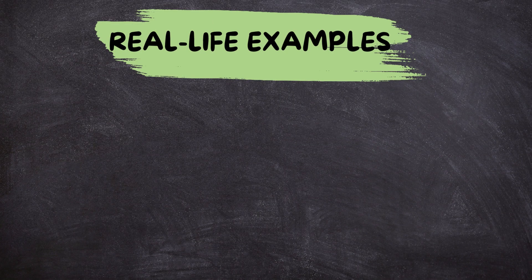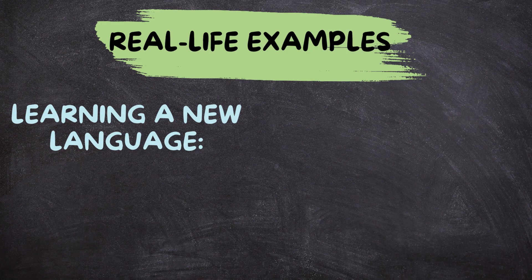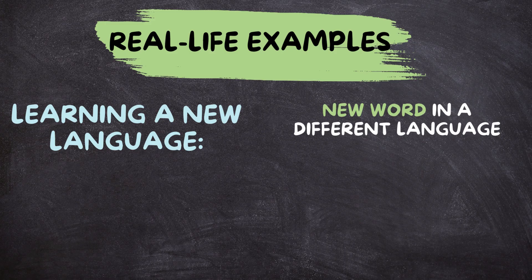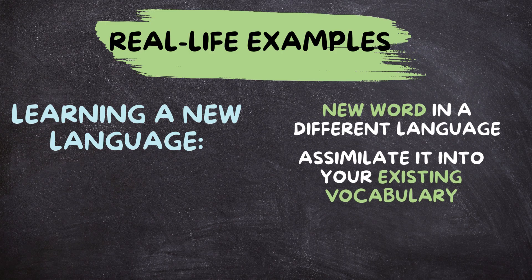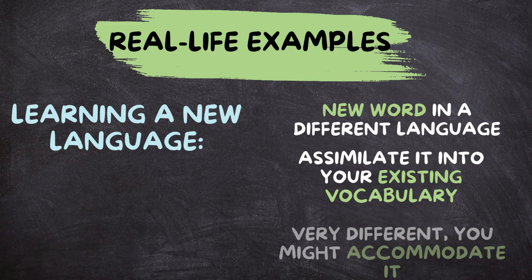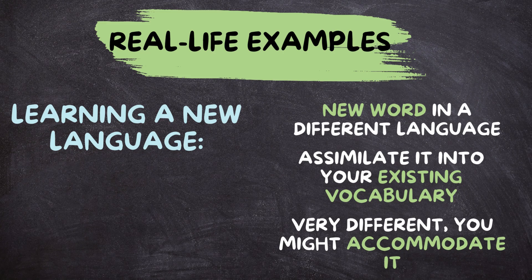Let's look at some everyday examples of accommodation and assimilation. When learning a new language, you might assimilate a new word into your existing vocabulary if it sounds similar to a word you already know. But if it's very different, you might accommodate it by creating a new category for words that sound like that.